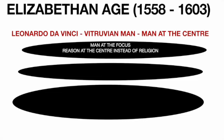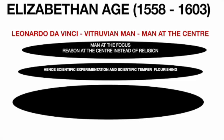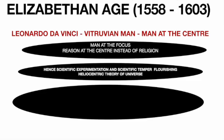Because reason was now at the center, scientific experimentation flourished. The old Aristotelian theory — that earth is at the center of the universe — was replaced. Copernicus and Galileo presented their heliocentric theory, saying it is the sun, not the earth, that is at the center of the universe. Everything was now being challenged, verified, and experimented upon. Harvey came in and talked about the circulation of blood in the body.